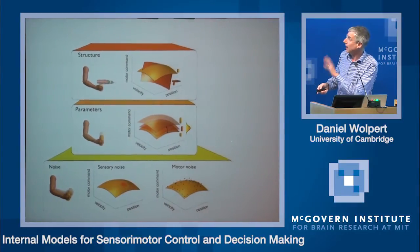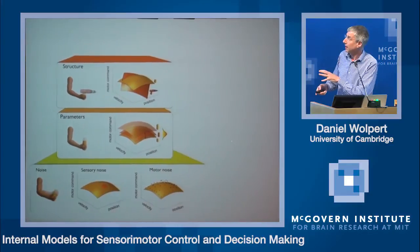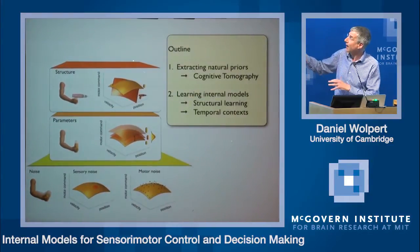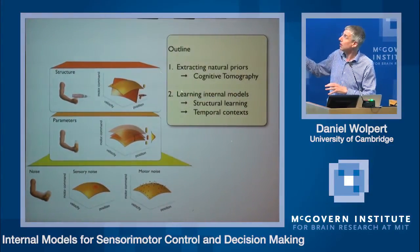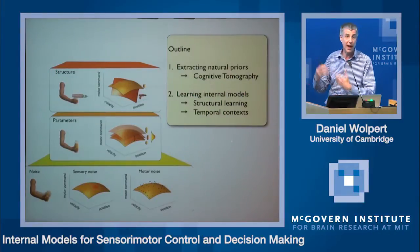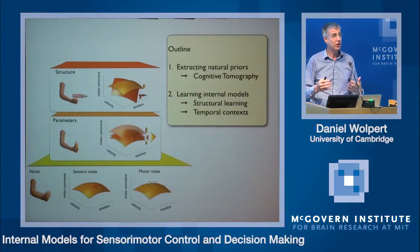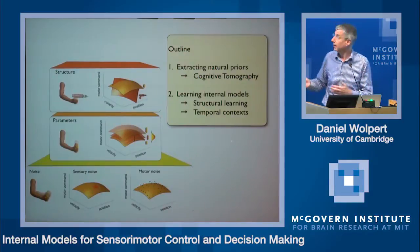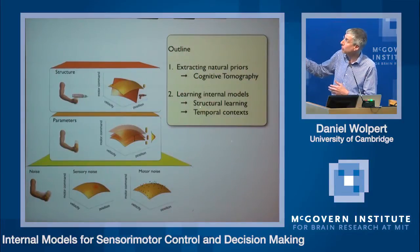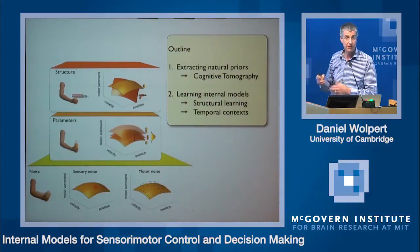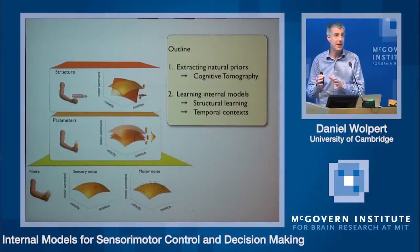Today I want to cover issues to do with how you might learn about structures and parameters, or how you extract priors from the world — particularly techniques for extracting natural priors. I'll then move on to learning internal models in terms of structural learning and temporal context, and if there's time at the very end, I might talk a little bit about decision-making.